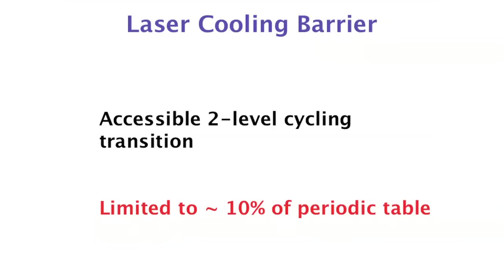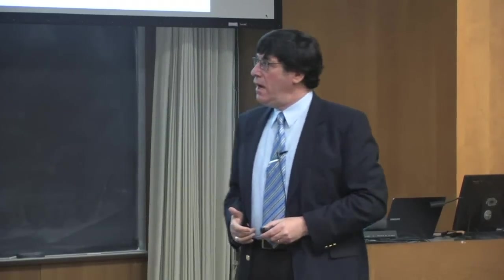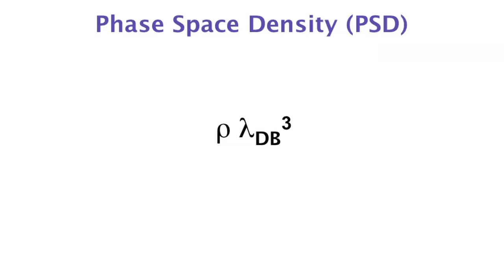This simple two-level feature exists only for a small set of elements in the periodic table — around 10 to 15 percent depending on how many lasers you are willing to use. Most experimenters trap rubidium; one famous physicist called it 'God's gift to physicists.' But what about hydrogen? That atom cannot be laser cooled. Could we not find a method that works on any element, or even on molecules?